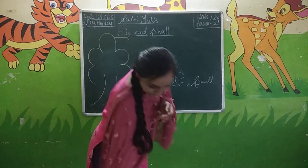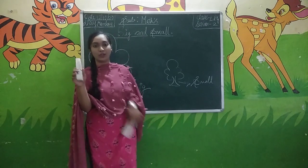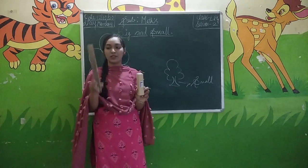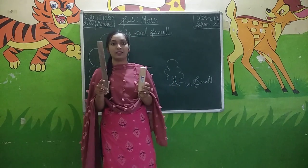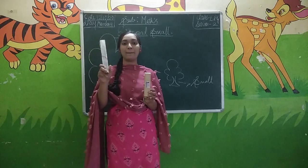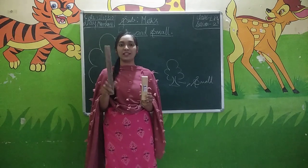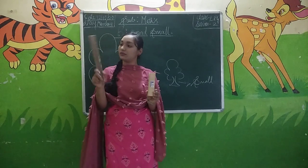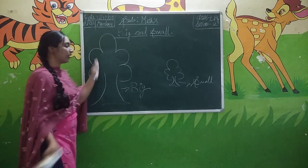One more example I will give you. So this is a stick, and this one is a duster. Can you say to me which object is big and which object is small here? So here a stick is big, whereas a duster is small. We can say that stick is big compared to duster, whereas duster is small when compared to stick.